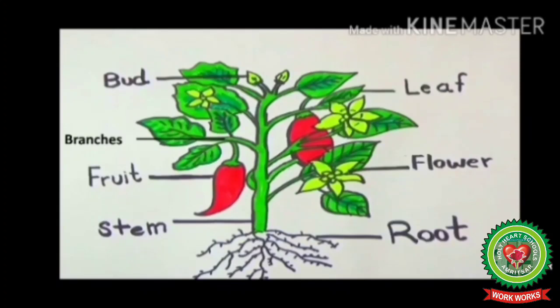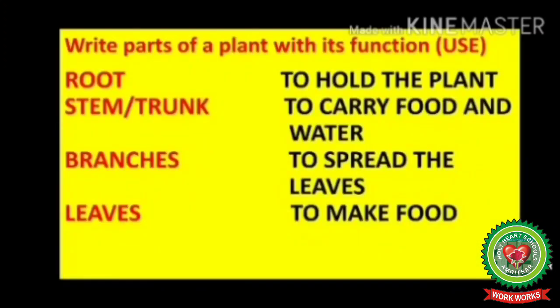Shade — S-H-A-D-E — shade means shelter. Now children, before we start the chapter, let's discuss about parts of a plant. This is a plant. Its part is root — root is the part which grows under the soil. Other parts like stem, branches, leaf, bud, flower, and fruit grow above the ground. Now let's discuss about the function of each part. Every part has its function or use. Write: parts of a plant with its function of use.